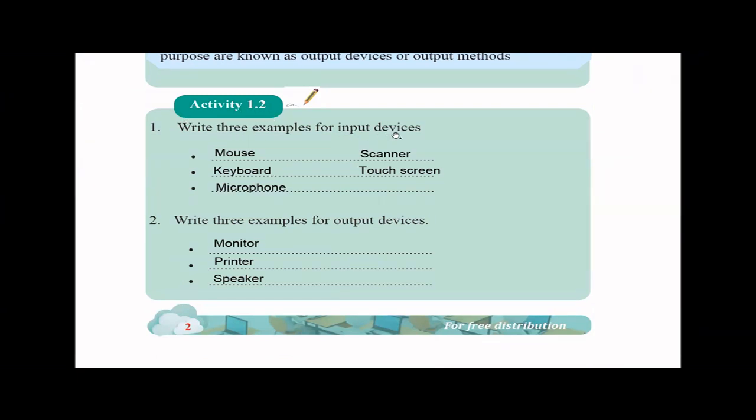Then comes Activity 1.2. Write three examples of input devices. I have written more for your reference, but only three is asked: mouse, keyboard, microphone, scanner, touch screen. So all these are input devices, where you feed the data into the computer. Write three examples of output devices: monitor, printer, and speaker. So I hope you remember the soft output and the hard output. Monitor is giving you a soft output where you cannot touch the output, but printer, you can touch the output. So that's the hard output.